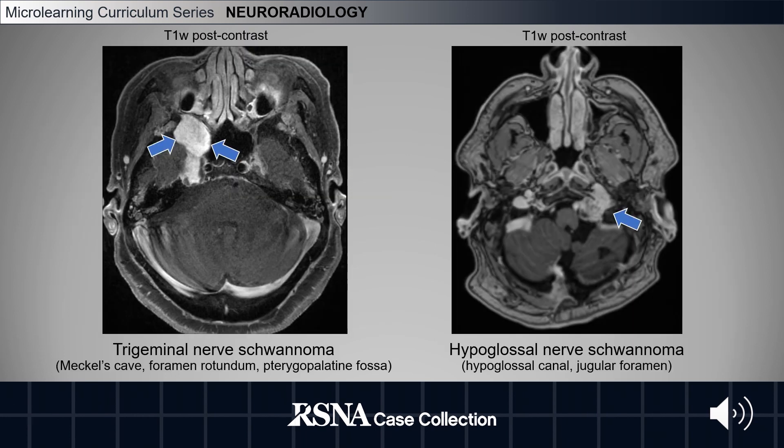Here we have T1-weighted post-contrast images of a trigeminal nerve schwannoma on the left and a hypoglossal nerve schwannoma on the right, as denoted by the blue arrows. Pay special attention to key anatomical structures that are related to each cranial nerve.